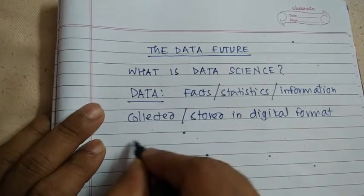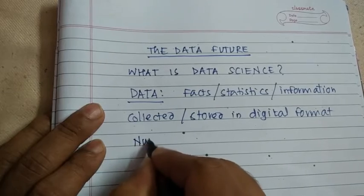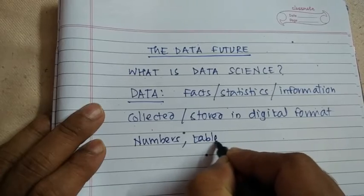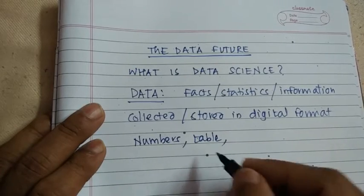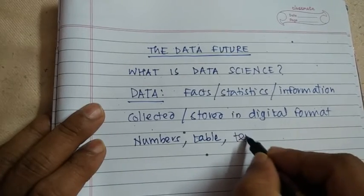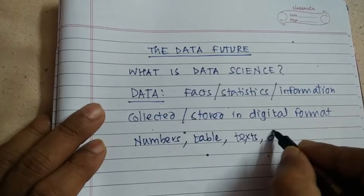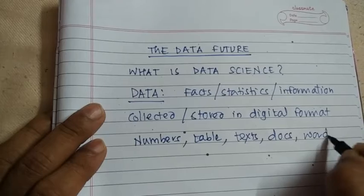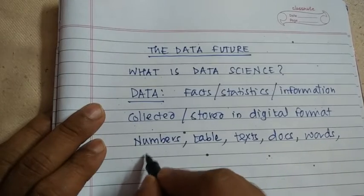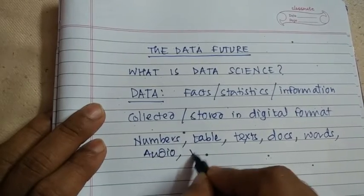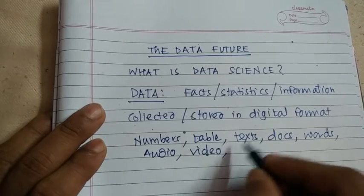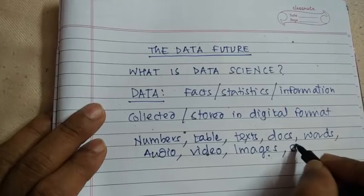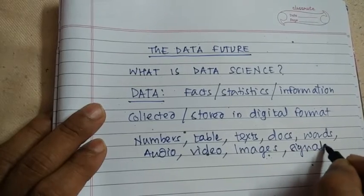The data may be numbers, may be in tabular forms or tables containing the data, it may be text, it may be documents, it may be words, it may be audio files, it may be video files, it may be images, or it may be signals. So data may be anything from this.